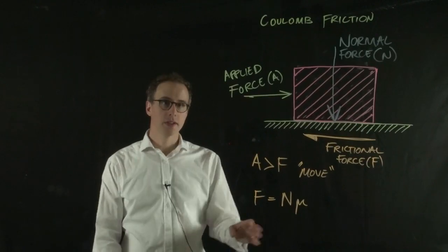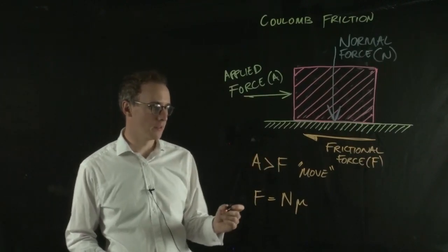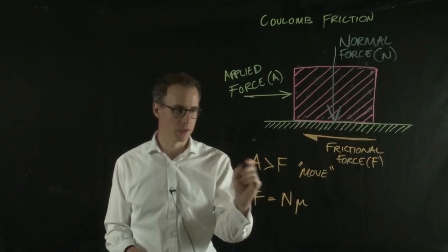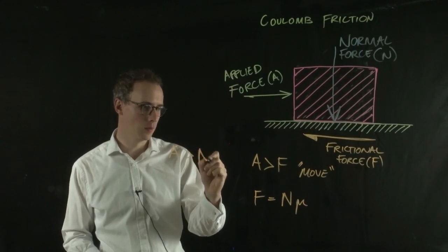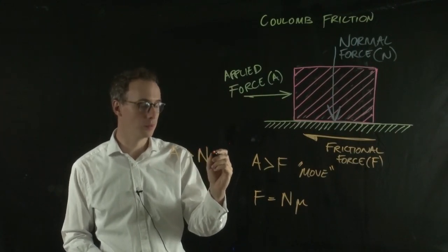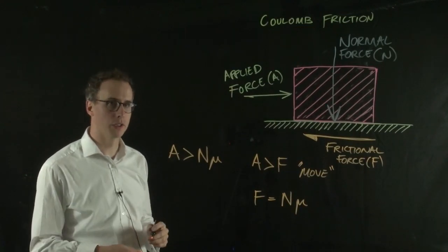Because of this relationship, we can put these two things together and say that the block wouldn't move until A was greater than the normal force multiplied by the coefficient of friction.